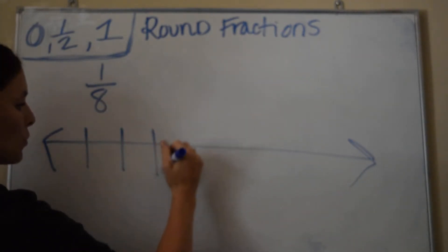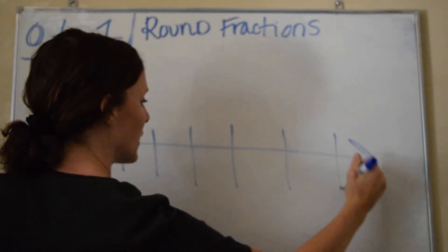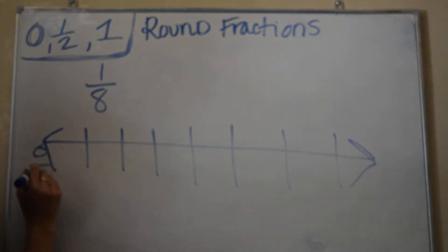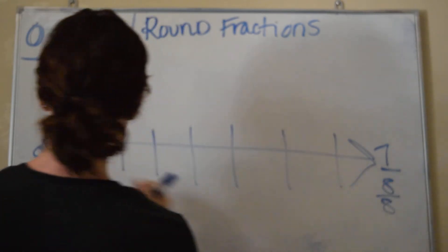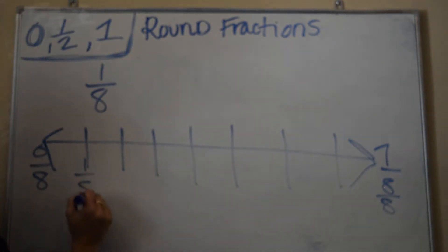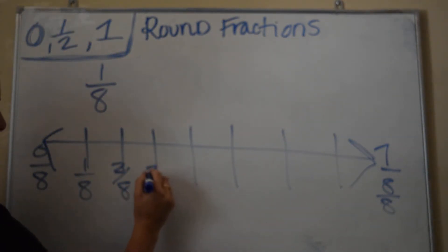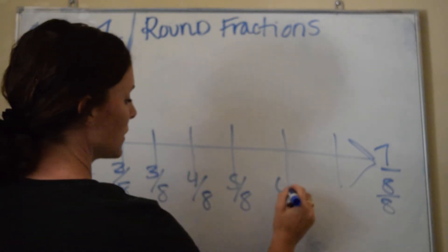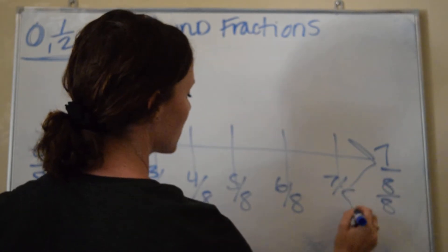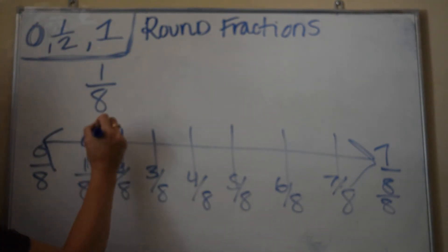So let's see: 1, 2, 3, 4, 5, 6, 7. This would be 0/8. This would be 1 whole, or 8 out of 8. And then I need to fill it in: 1/8, 2/8, 3/8, 4/8, 5/8, 6/8, and 7/8. Where is my 1/8? Right here.